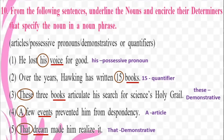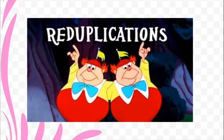After finding out all the answers, I want you to go through all the sentences again and check whether you have understood what a noun is and what a determiner is. Shall we move on to the next point? We have an exercise based on vocabulary with four kinds of vocabulary exercises. The first one is reduplications.